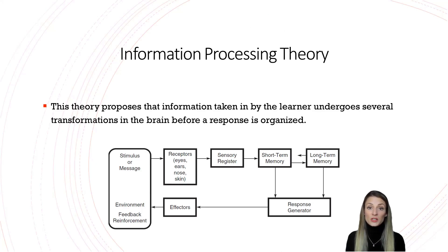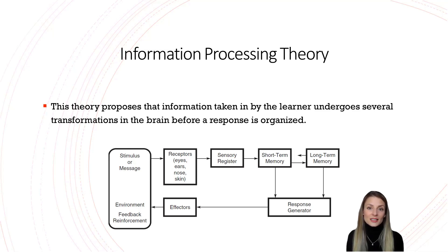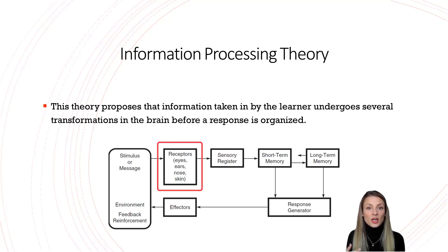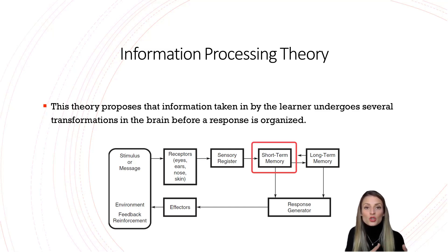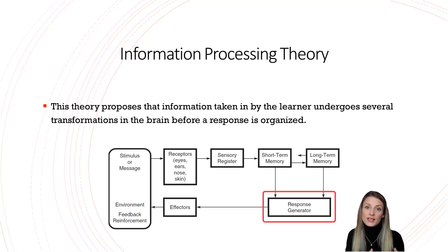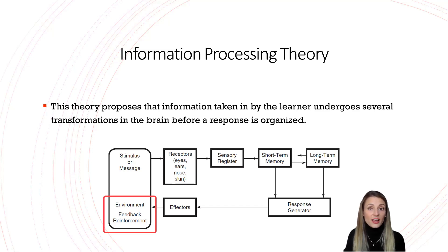The final learning theory we're going to cover is information processing theory, which attempts to explain the internal processes that influence learning. It likens the human mind to a computer, suggesting that information is taken in by the senses and then undergoes several transformations as it moves from the senses to short-term memory and then to long-term memory, where the mind organizes a response. The environment, via feedback and reinforcement, also plays a role in this process.